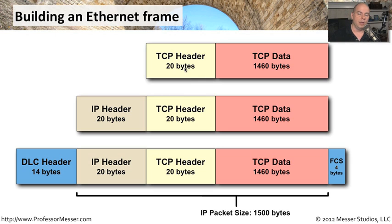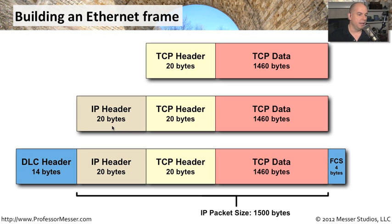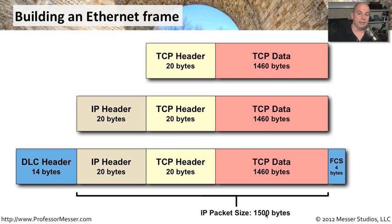That TCP header takes 20 bytes. Of course, you can't just send TCP — we need to wrap that up into the IP part of this packet, so we'll stick an IP header on the front. That IP header has the destination IP address, the source IP address, and some other information. So to send all of that data out, we need at least the 1,460 bytes, plus 20 bytes for the TCP header, and another 20 bytes for the IP header. That makes a total of 1,500 bytes of IP information that we would be sending from end to end.